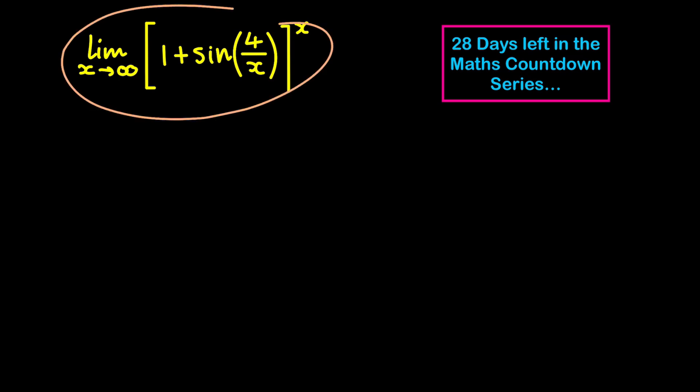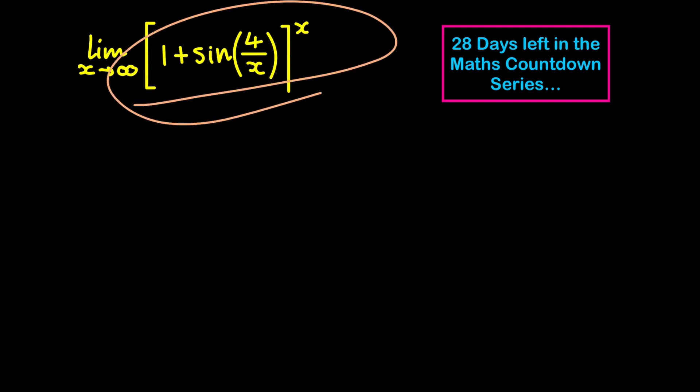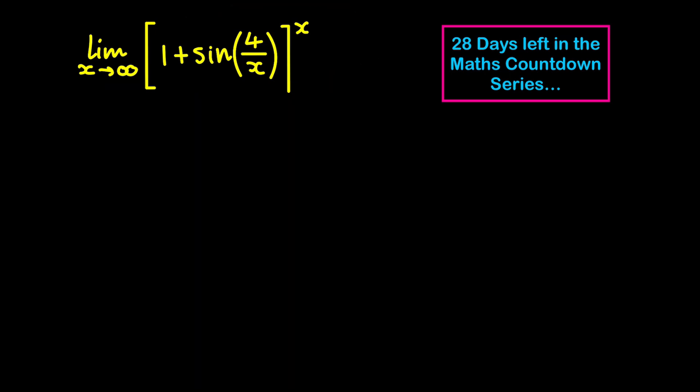Let's go straight to this limit. The problem with this limit is this x here in the exponent. It creates a problem in that if we were to evaluate the limit as it is, x going to infinity would make this extremely large. So we can't do that — it's just indeterminate. We have to manipulate it in some way.